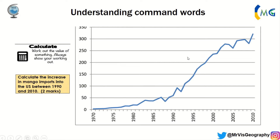The next instruction is 'calculate.' When you calculate something, you usually always have a two-mark answer, mainly because you get a mark for the answer and a mark for the reasoning or the data you provide. In this case, it says: calculate the increase in mango imports into the US between 1990 and 2010. In 1990 we're looking at about 50 tonnes, and in 2010 we're looking at about 325 tonnes. You give those two numbers and the difference is about 270 tonnes. You get the two marks.